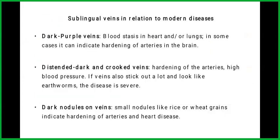Sublingual veins in relation to modern diseases: dark purple veins indicate blood stasis in the heart and/or lungs. In some cases, it can indicate hardening of the arteries in the brain. If the veins are distended, dark, and crooked, that is hardening of the arteries and high blood pressure. If veins also stick out a lot and look like earthworms, the disease is severe. For dark nodules on veins where the small nodules look like rice or wheat grains, this indicates hardening of the arteries and heart disease.